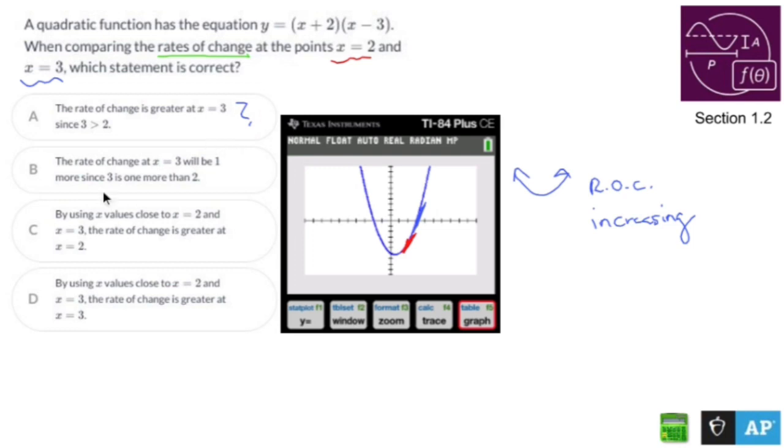The rate of change at x equals 3 will be 1 more, since 3 is 1 more than 2. I don't think that's the case. By using x values close to 2 and x equals 3, the rate of change is greater at x equals 2. That's not true. By using x values close to 2 and x equals 3, the rate of change is greater at x equals 3.